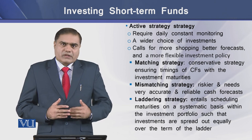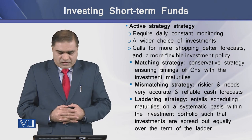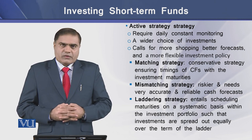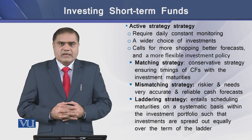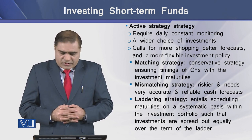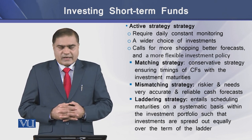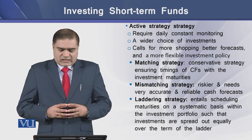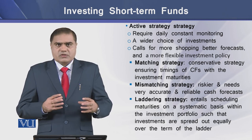Within the active strategy group, there are three further types. The first is the matching strategy, the most conservative type, where the timing of cash flows is matched with investment maturities. The second is the mismatching strategy, which is riskier and requires much more accurate forecasting. The third is the laddering strategy, which entails scheduling maturities on a systematic basis so that investments are spread evenly across the terms of the ladder.